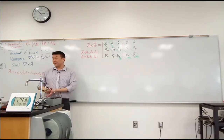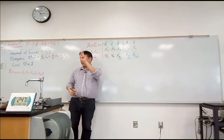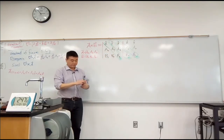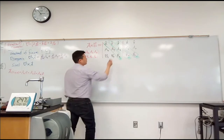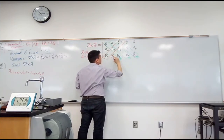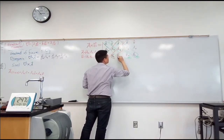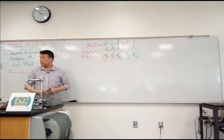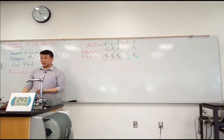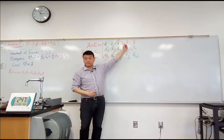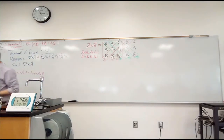That gives you one set of terms. The other three terms come from diagonals going down to the left, and those get a minus sign. So there are six total terms, usually grouped by their unit vectors.